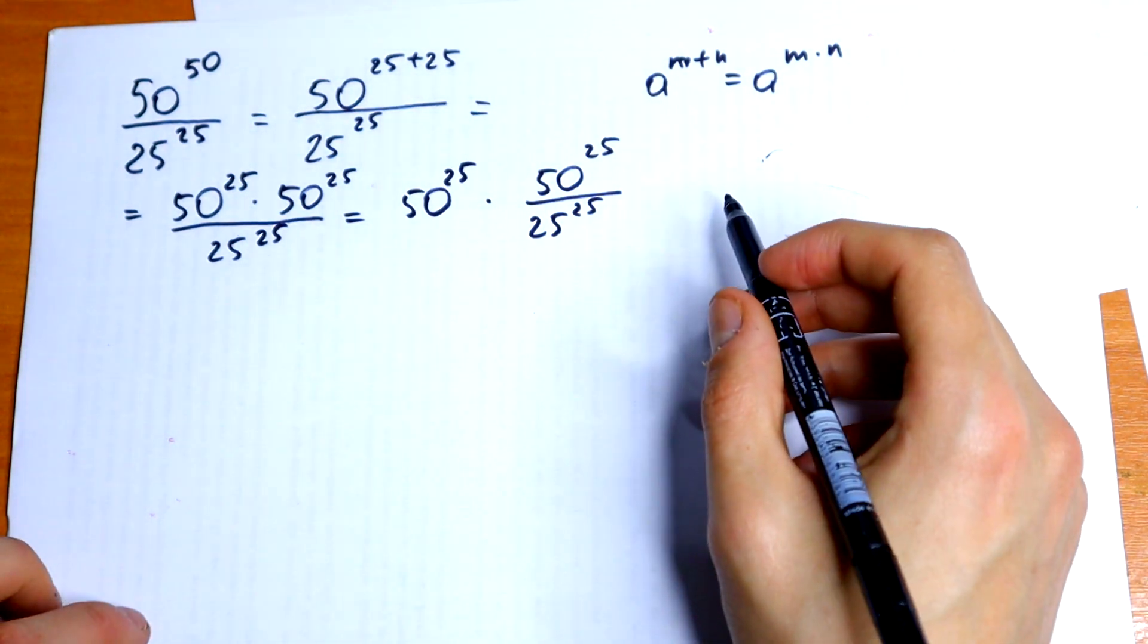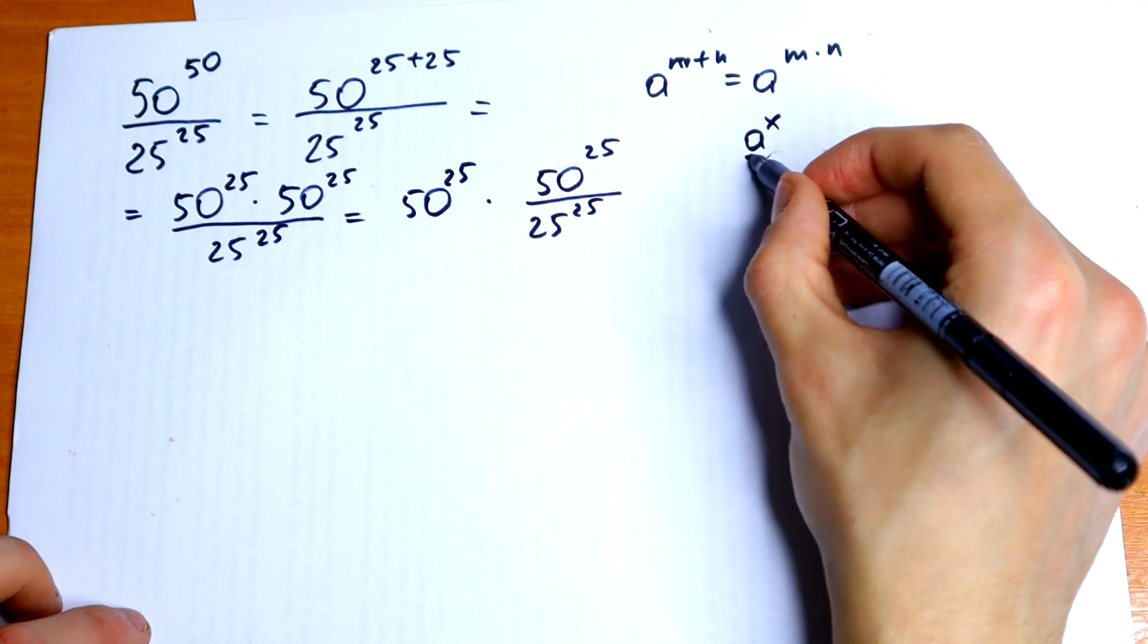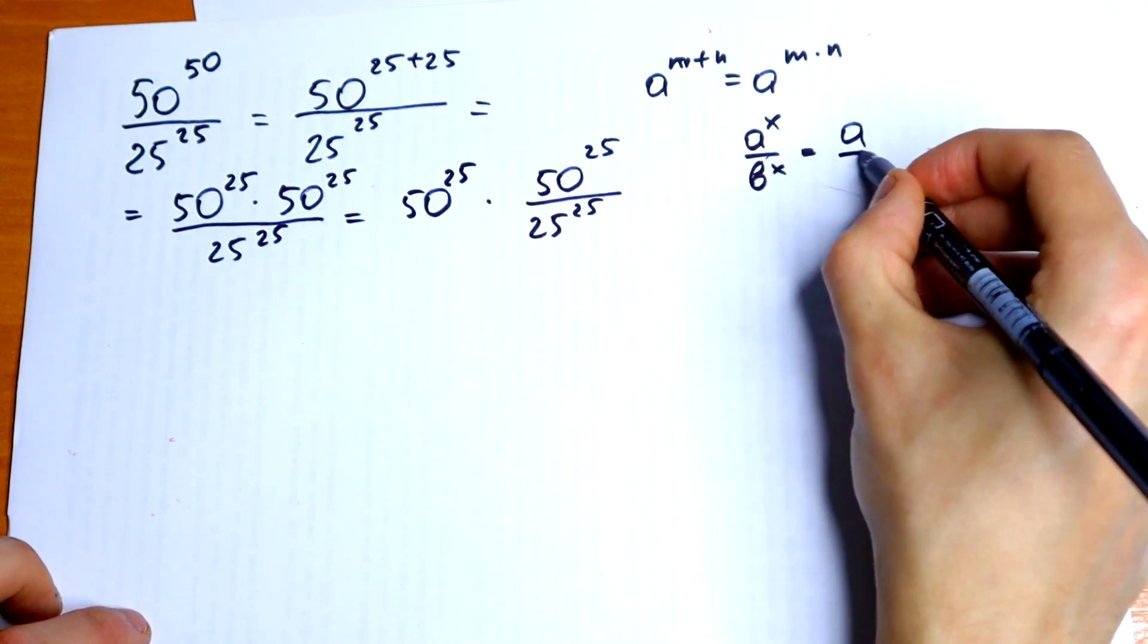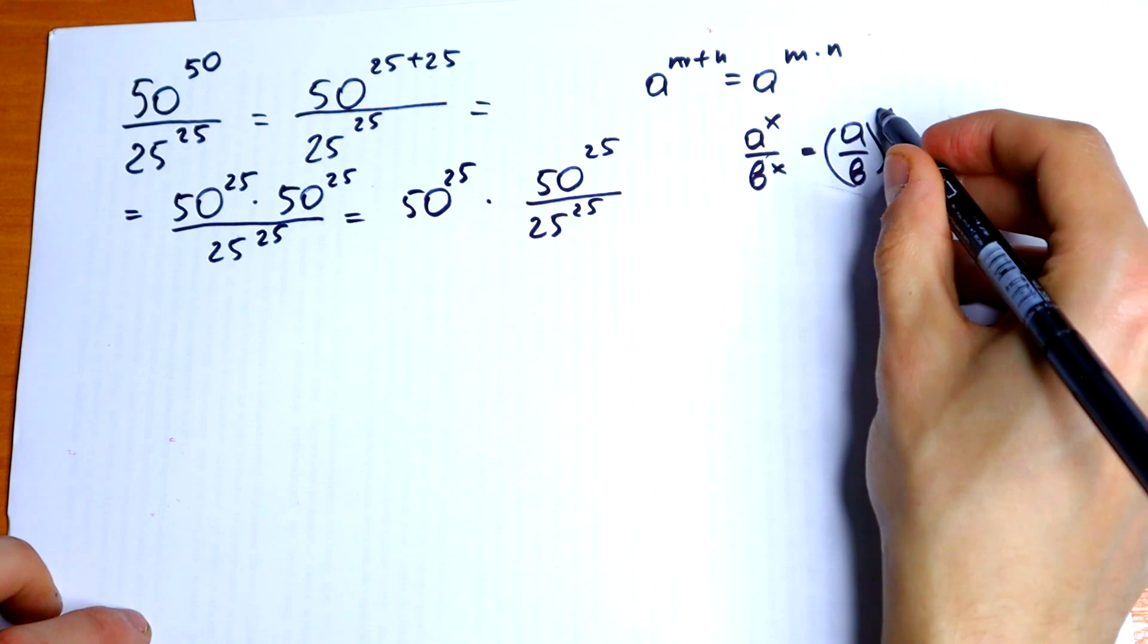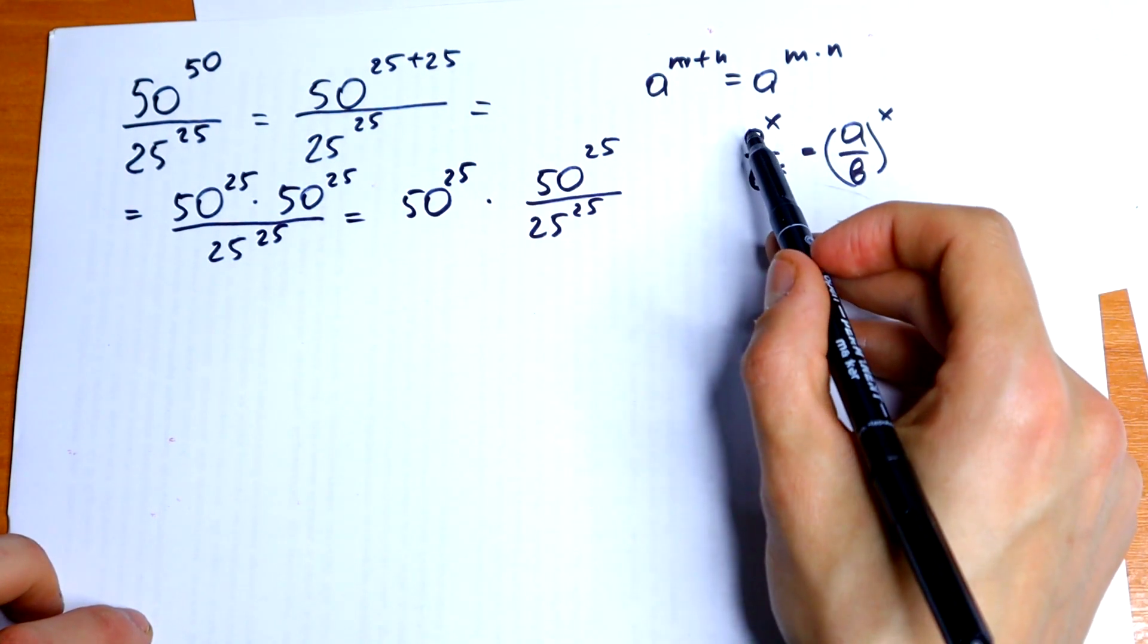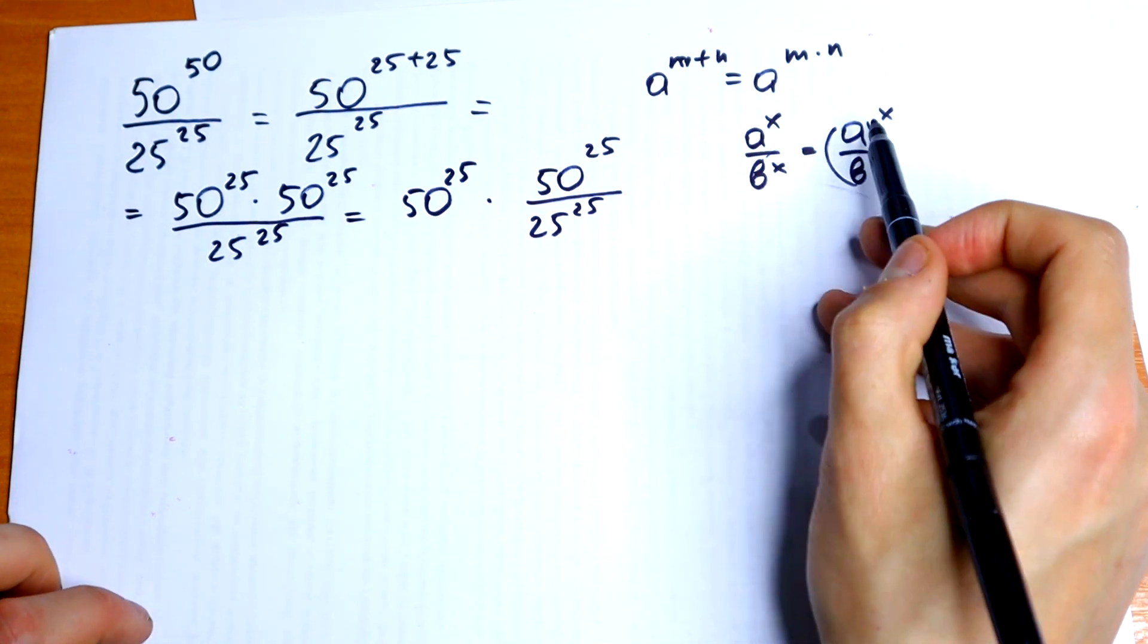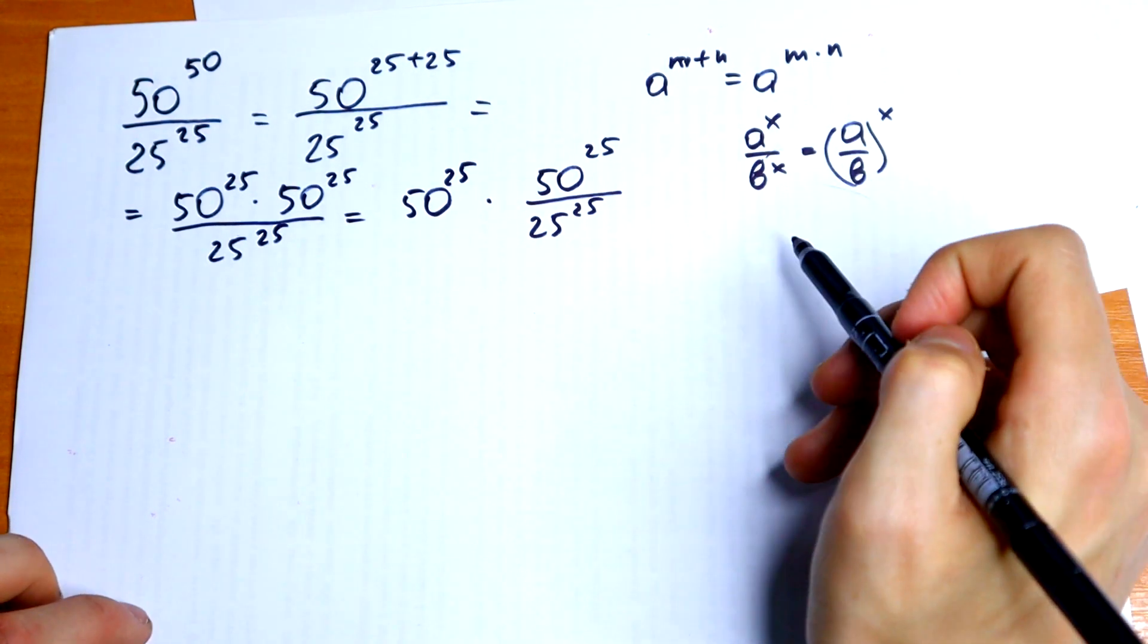The next rule I need is that we have a to the power x all over b to the power x. It will be equal to a over b to the power x in one parentheses. So if I have different bases but same exponent, I can write it in one parentheses and just use this exponent as well.